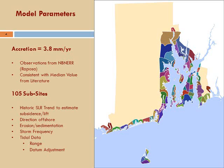To run the model, we divided the coastline up into subsites since there are different characteristics at different places across the coast. In this case, you see 105 subsites, and then different model parameters that we apply to each of those — things like historic sea level rise, direction offshore, erosion rates, sediment rates, storm frequency, and of particular importance, the tidal data.